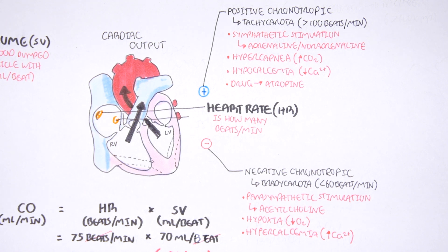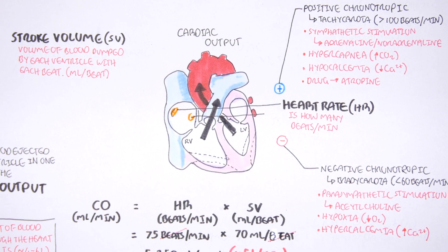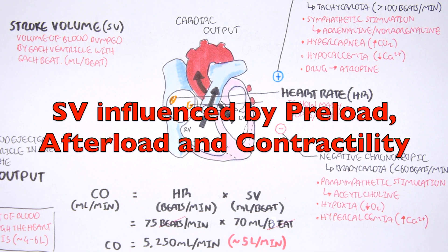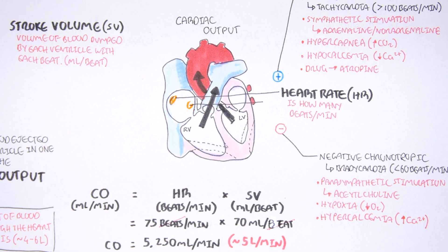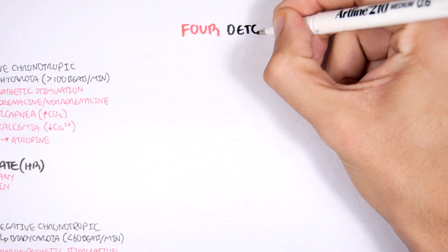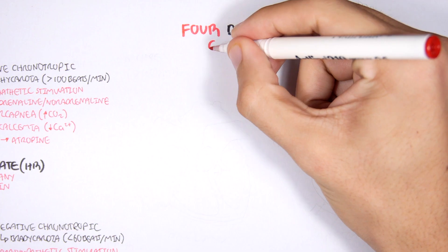Cardiac output is calculated by heart rate and stroke volume, and heart rate is influenced by positive and negative chronotropic factors. Stroke volume can also be influenced by many other factors: preload, afterload, and contractility. Because stroke volume influences cardiac output, we can say there are four total determinants of cardiac output.